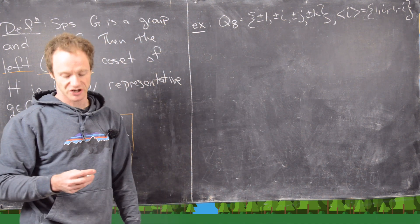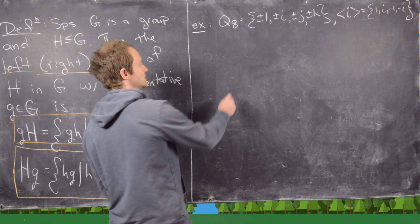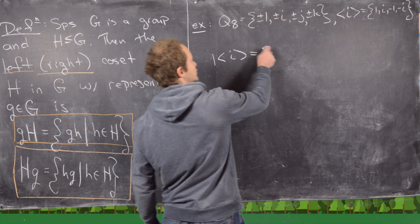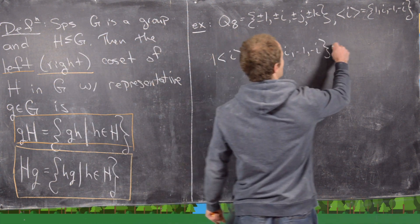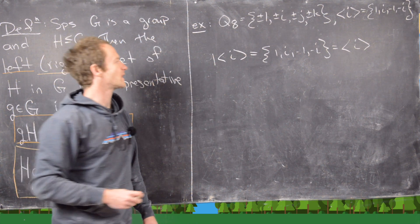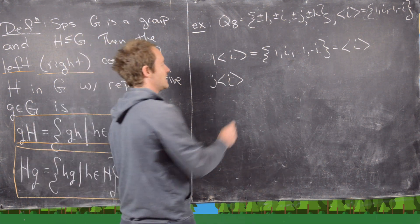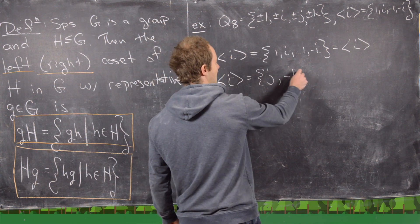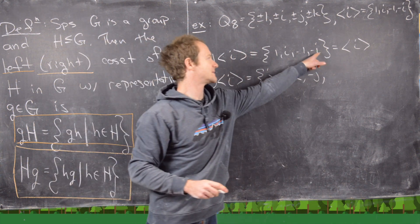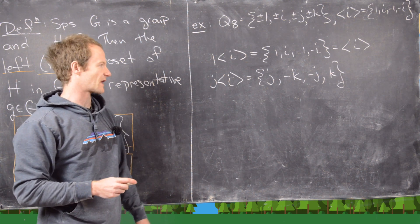Here our operation is multiplication, so we won't use plus when defining the coset. The coset with representative the identity: multiplying every element of ⟨i⟩ by 1 just gives us {1, i, -1, -i} — the coset with representative identity is always just the subgroup itself. Now let's take an element outside the subgroup, like j, multiplied by every element: j·1=j, j·i=-k, j·(-1)=-j, j·(-i)=k. So that coset is {j, -k, -j, k}.